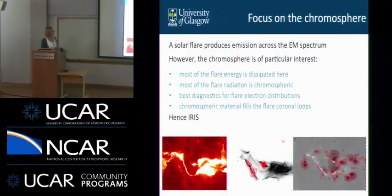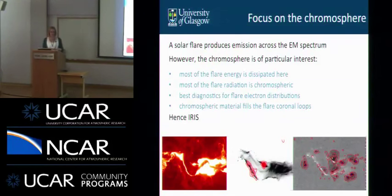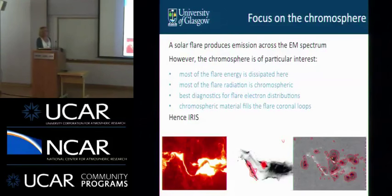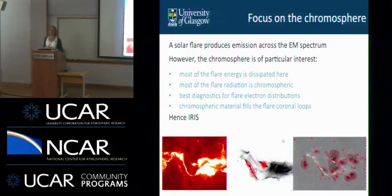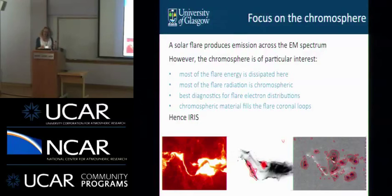Why are we focusing on the chromosphere? A solar flare produces emission across the whole electromagnetic spectrum, but the chromosphere is undoubtedly of particular interest because that is where most of the flare energy is dissipated — it is therefore where most of the flare radiation comes from, and it is our prime diagnostic regime. It also provides the best diagnostics for the flare electron distributions. We think that some tens of percent, maybe as much as 50%, of the total flare energy ultimately ends up in the kinetic energy of electrons in non-thermal distributions. Chromospheric material also fills the hot flare coronal loops.